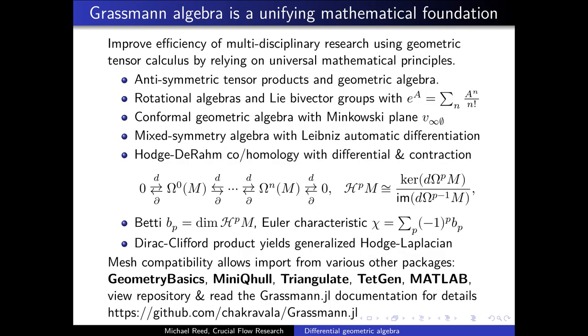Grassmann algebra is a unifying mathematical foundation. It helps improve efficiency of multidisciplinary research using geometric tensor calculus by relying on universal mathematical principles, which include anti-symmetric tensor products and geometric algebra, rotational algebras and Lie bivector groups with exponential, conformal geometric algebra with the Minkowski plane, mixed symmetry algebra with Leibniz automatic differentiation, Hodge and de Rham co-homology with differential and contraction, Betti numbers and the Euler characteristic, Dirac and Clifford product and the Hodge Laplacian. And now we have mesh compatibility that allows import from various other packages,